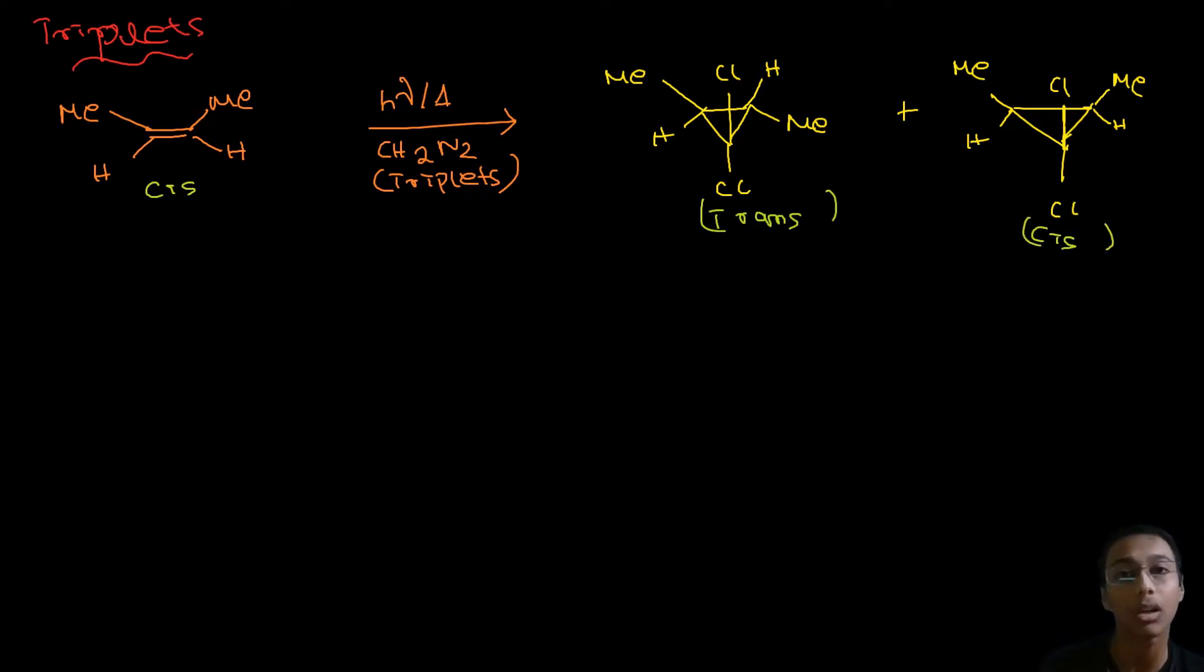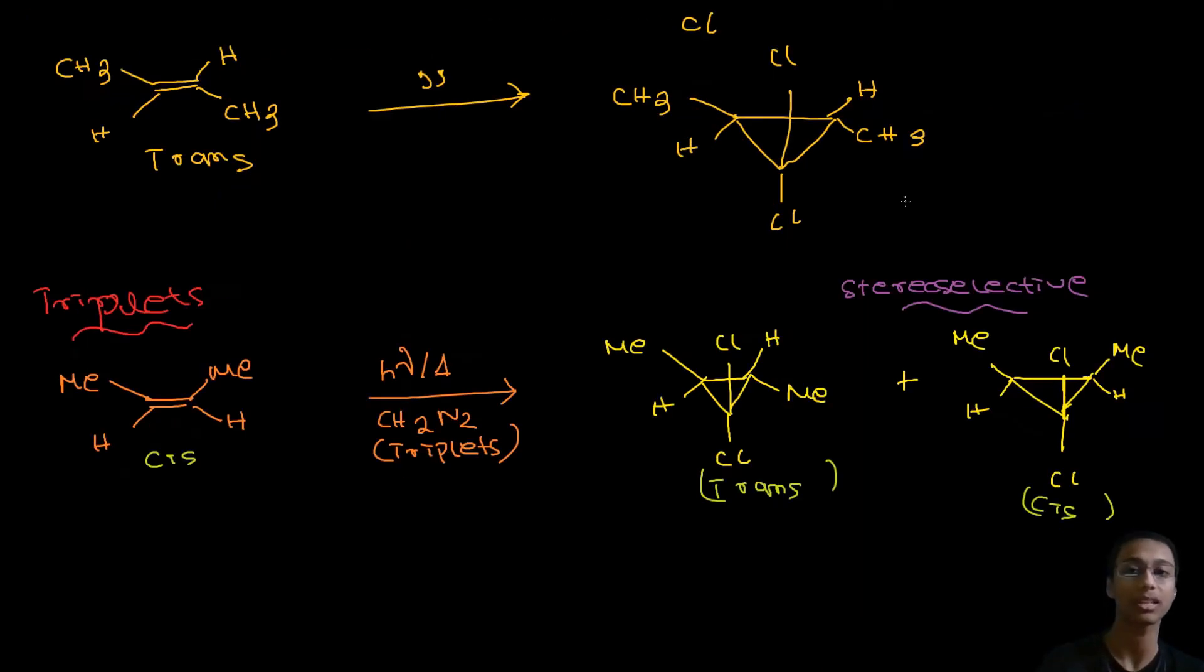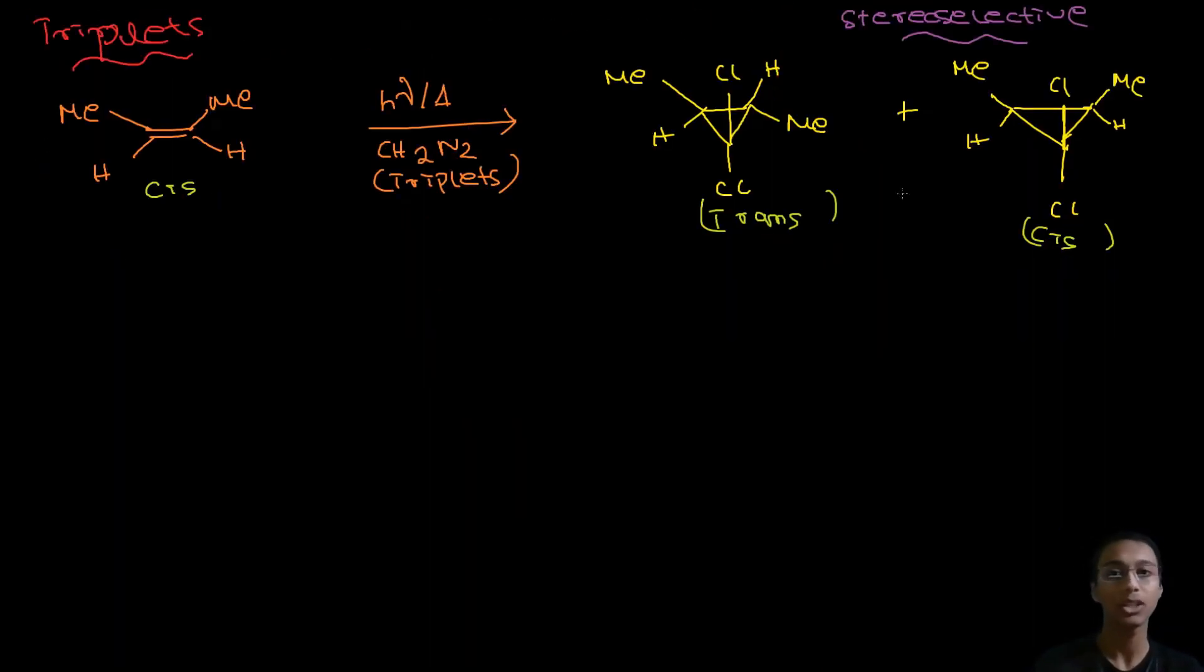So this is called a stereoselective reaction. If you give either cis or trans, you will get both, and the previous was stereospecific where if you give either cis or trans, you will get either cis or trans. Now you know the products, you can already score full marks in exams. Now let me just inform you about the mechanisms.